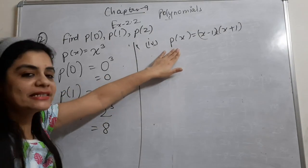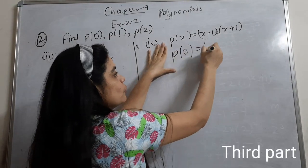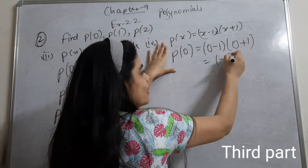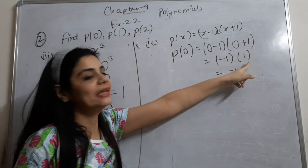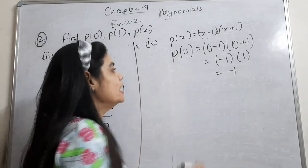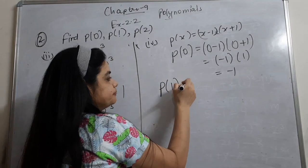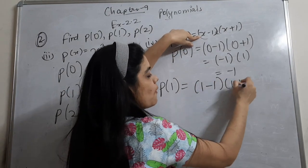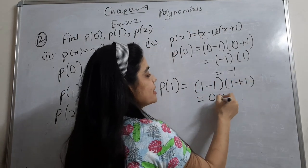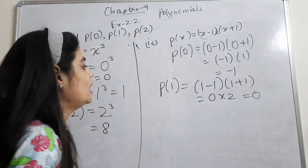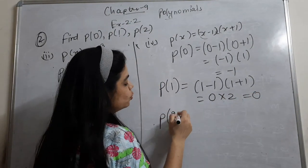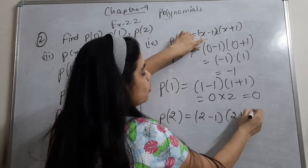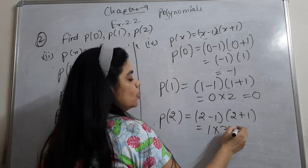Now p(1): put 1 wherever x is. So 1 minus 1 into 2, which is 0 into 2, which is 0. Now p(2): 2 minus 1 into 2 plus 1, that is 1 into 3, which is 3. So these were all four parts of question number 2.